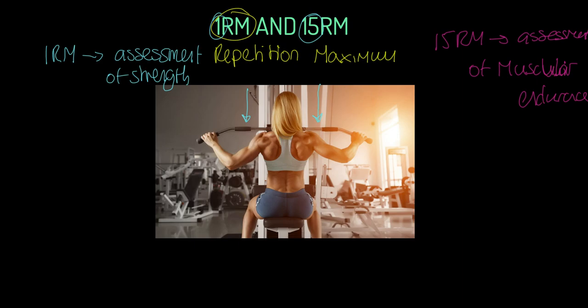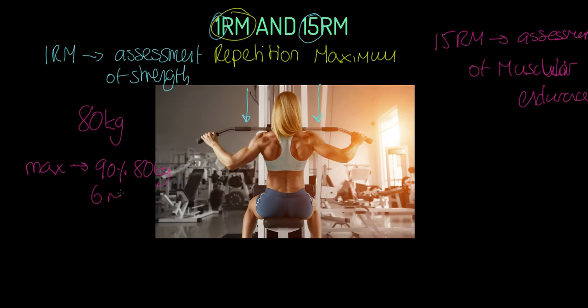Let's assume this person follows the one repetition max protocol and finds out their maximum lift is 80 kilos. If that person wanted to work on max strength, they would do 90 percent of 80 kilos — which is 72 kilos — for something in the region of six reps.